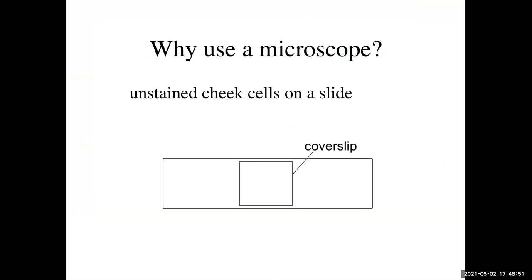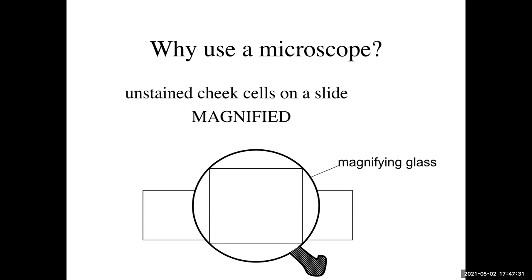You've done this at home when you made your cheek cells. You were perhaps like, did I get anything? I see maybe a little saliva — are there any cheek cells? There was transparent stuff on transparent glass with a transparent cover slip, unless you added methylene blue. If you hadn't stained them, it would have just been transparent stuff on transparent glass, and if you magnify that you would see a bigger version of nothing.